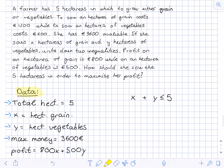As stated, a hectare of grain costs 1200 euros and a hectare of vegetables costs 600 euros. So we have 1200 times X plus 600 times Y — the cost per hectare multiplied by the number of hectares — and this has to be less than or equal to 3600 euros, because that's all the money she has available. So we now have a pair of inequalities.